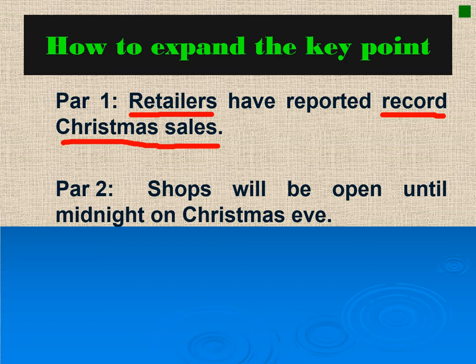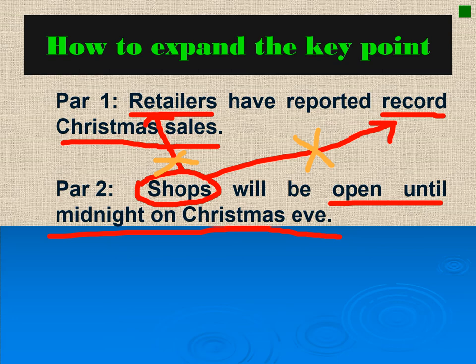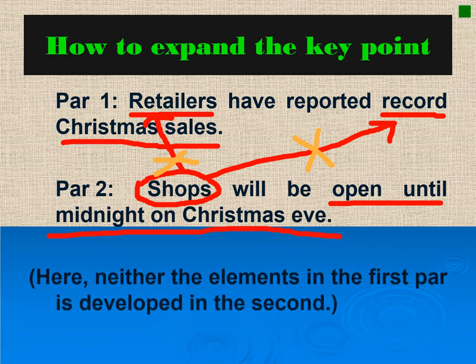What words or elements in the second paragraph are connected to the first paragraph? Is the word 'shops' connected to any of the elements in paragraph 1? Is it connected to 'retailers'? Obviously, it is not connected. How about 'open until midnight on Christmas Eve' — is it connected to any of the elements in paragraph 1? Obviously, neither the elements in the first paragraph are developed in the second paragraph, nor are the elements in the second paragraph connected to the first paragraph. Therefore, there is no logic here.